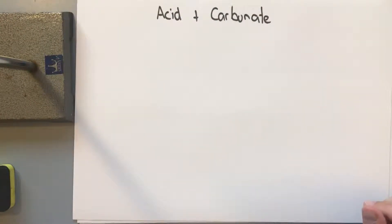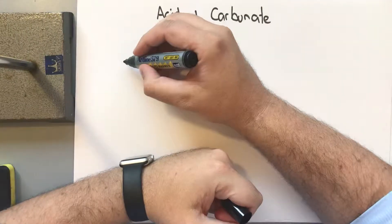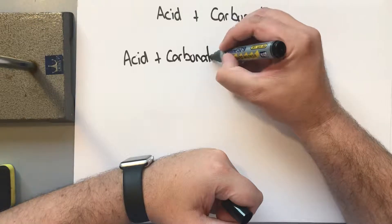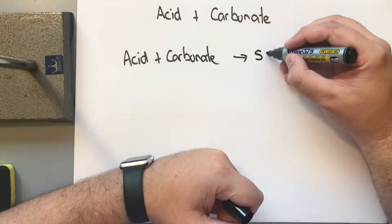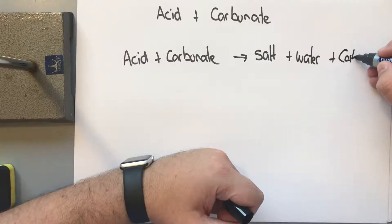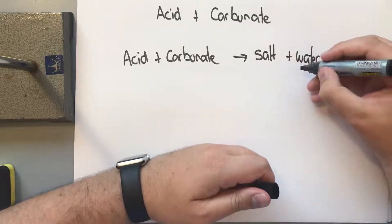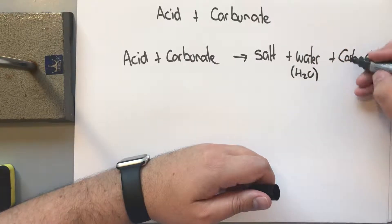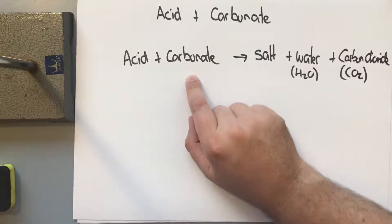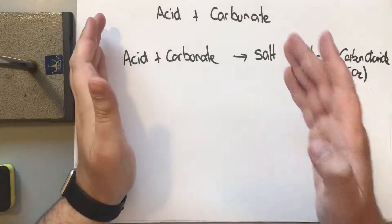The next one we're going to look at is acid plus carbonate. The word equation for acid plus carbonate is: acid plus carbonate reacts and produces salt plus water plus carbon dioxide. We know the equation for water is H₂O, and the equation for carbon dioxide is CO₂. So when balancing our equation, some atoms will form water, some will form CO₂, and whatever is left over will become our salt.